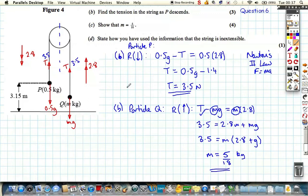This was part D. State how you use the information that the string is inextensible. An inextensible string means the acceleration is the same throughout the system, i.e. the acceleration of Q going upwards is the same as the acceleration of P going downwards.